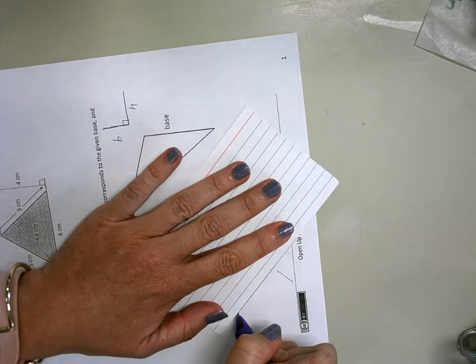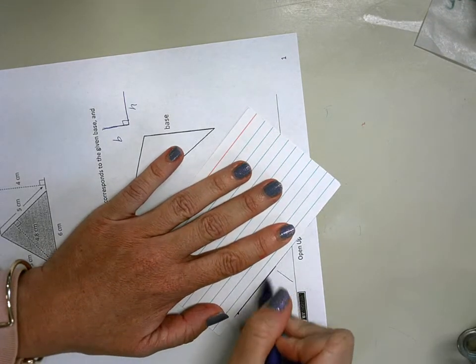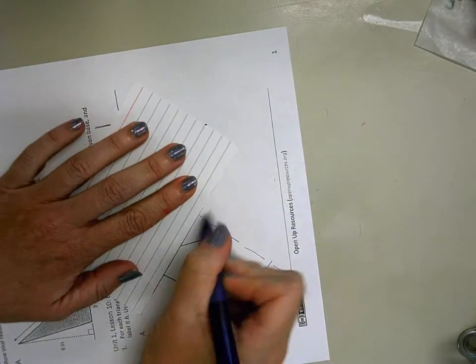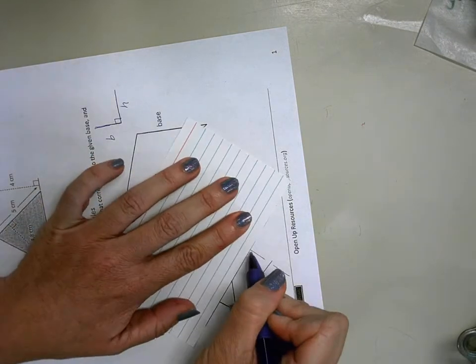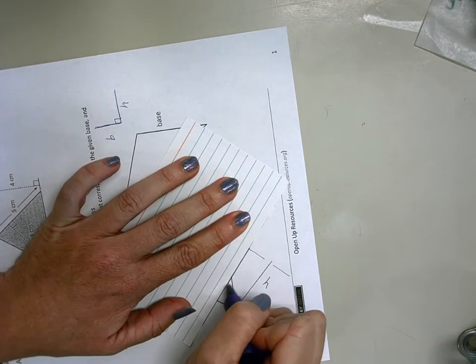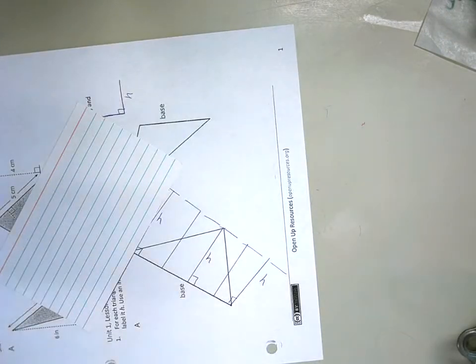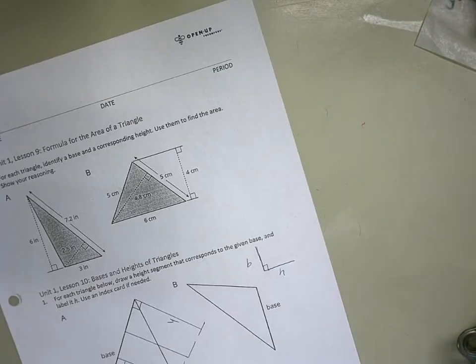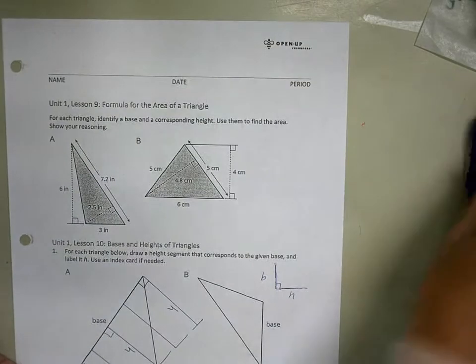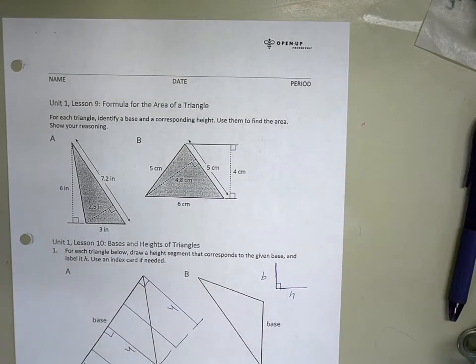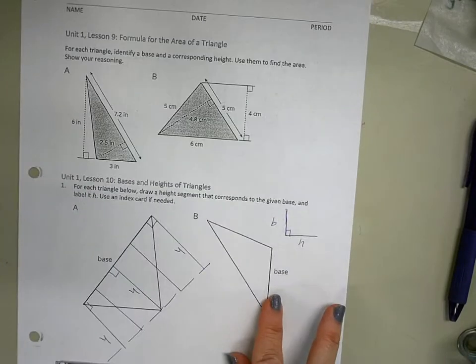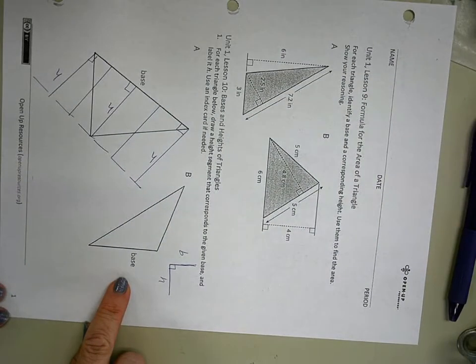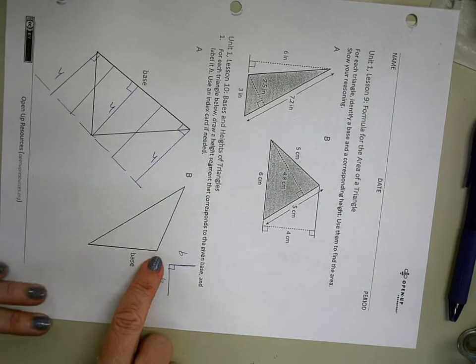There are multiple heights that you could draw as long as they're forming that 90 degree angle when they hit your base. And then for the second triangle, what do you think? You can pause me if you need for a minute. We're gonna rotate again. Sometimes it's just easier for me to have my base at the bottom, and it's not gonna be this side or this side of the triangle because they are slanted.